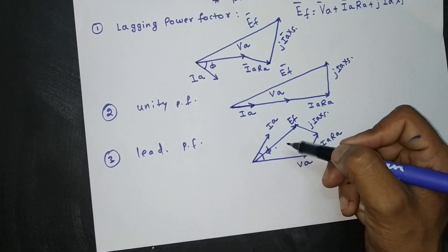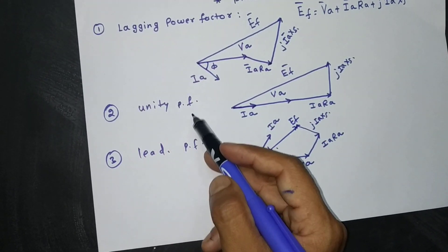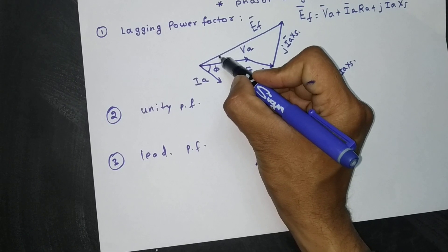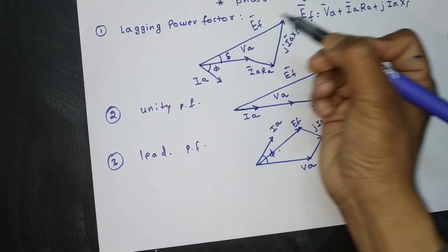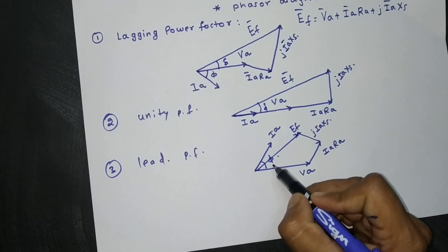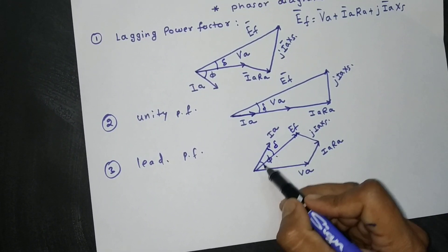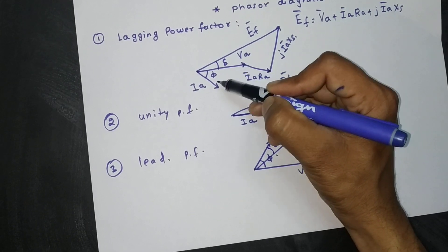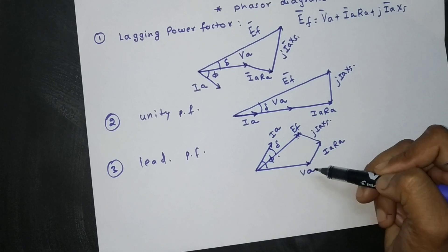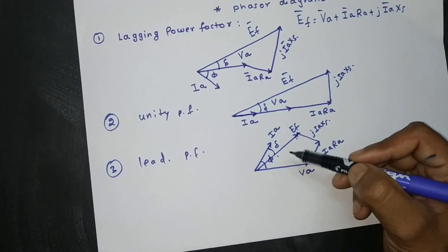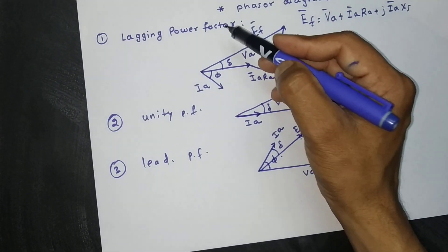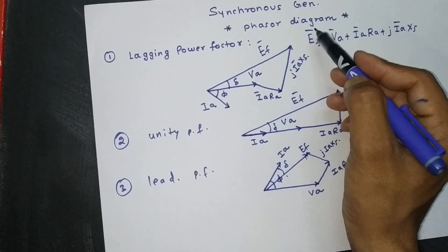In all three phasor diagrams — lagging, unity, and leading power factor — the angle between EF and VA is called the load angle. The angle between VA and IA is called the power factor angle phi. This is all about the synchronous generator phasor diagram.